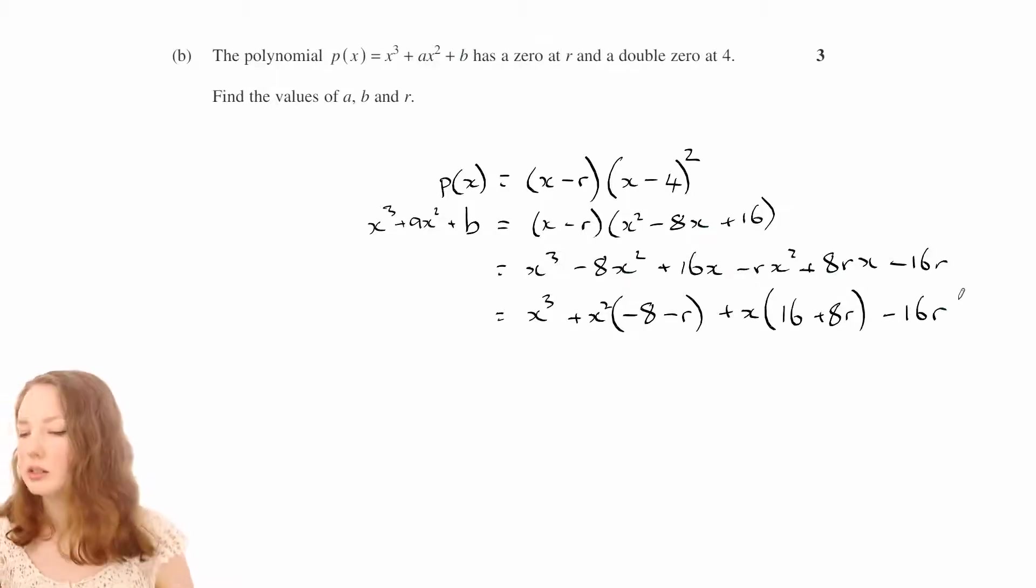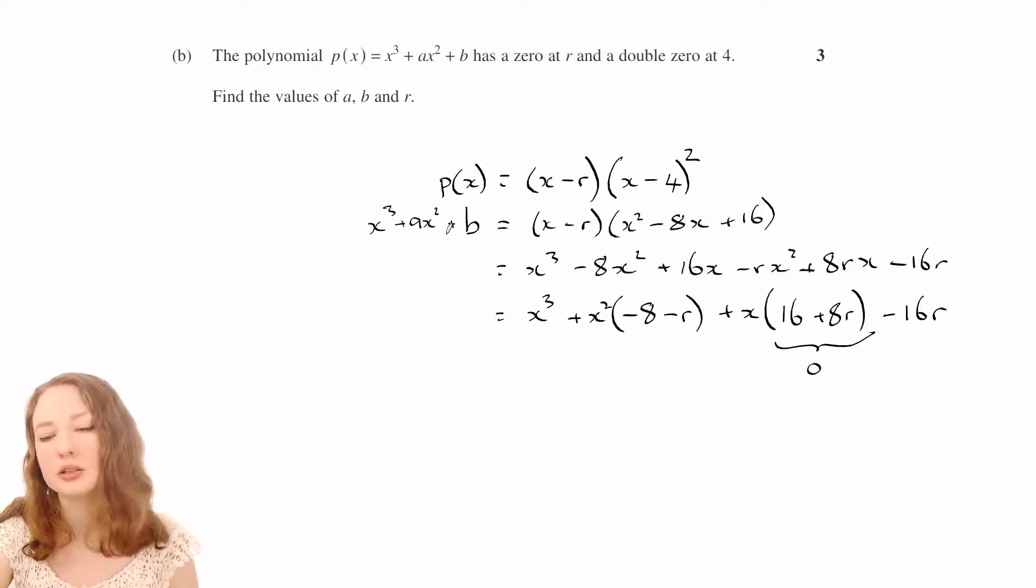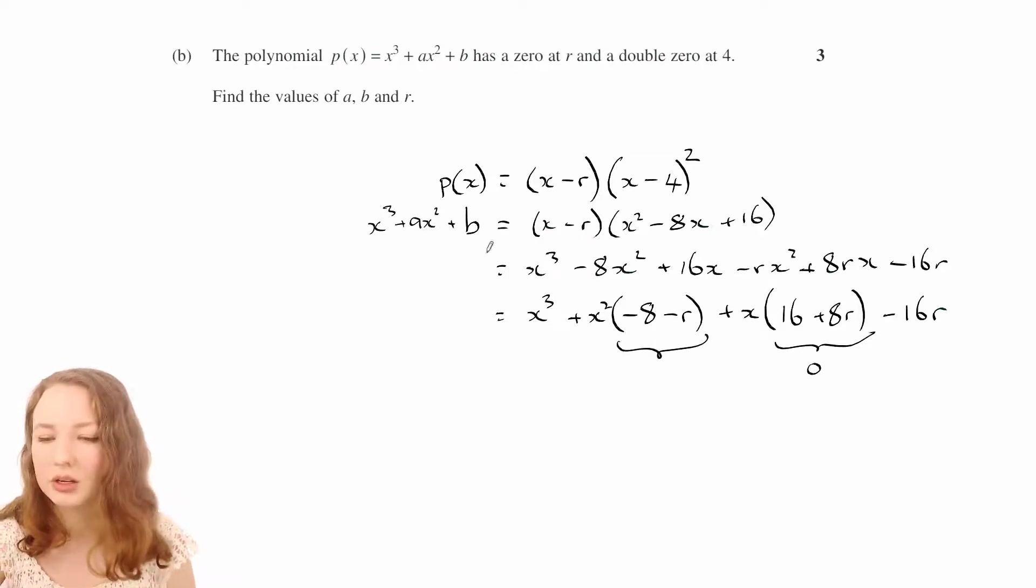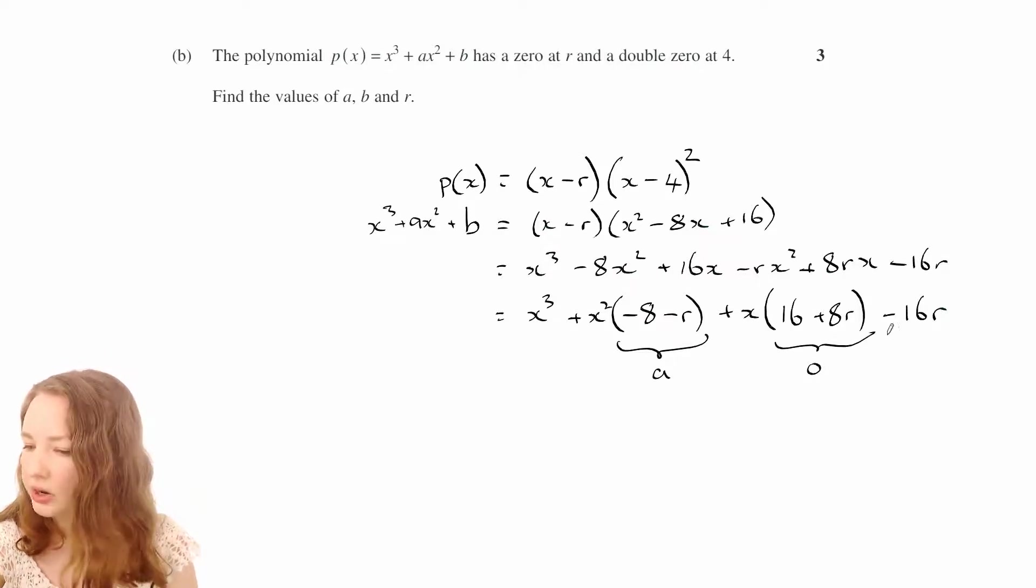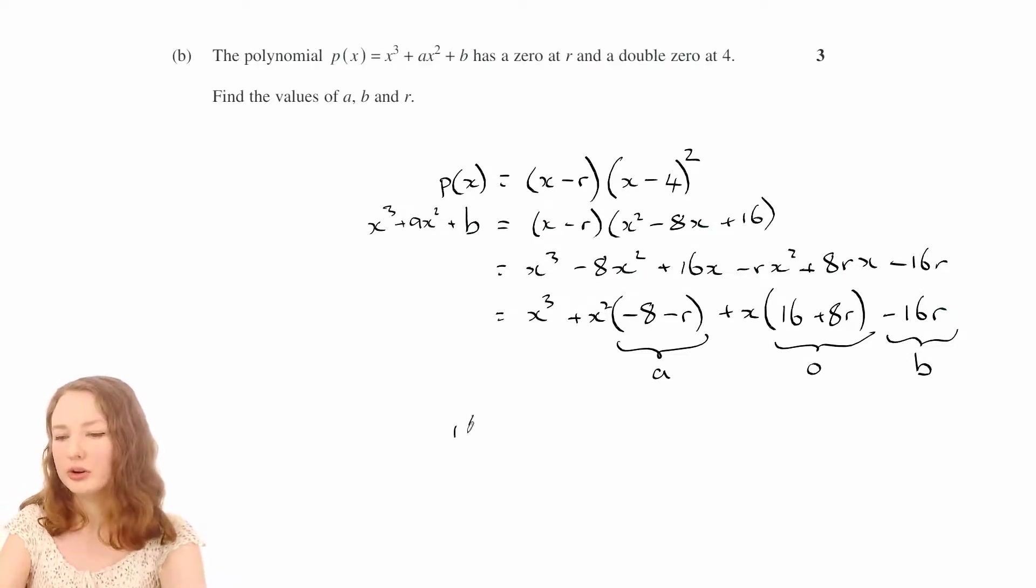Okay, well now we can see that this has to be 0 because there's no x term in here, and this one has to be equal to a, and this one is b. So that being 0, that will tell us that r has to be negative 2.